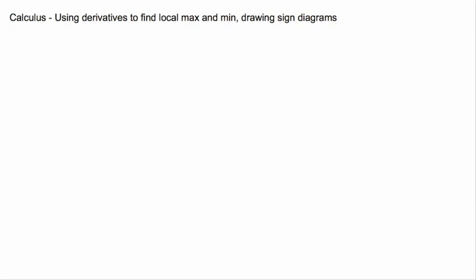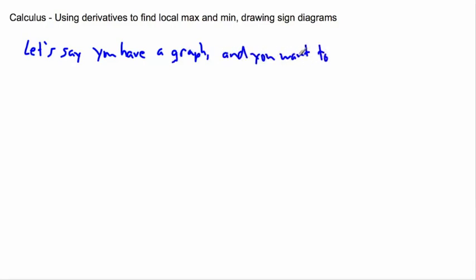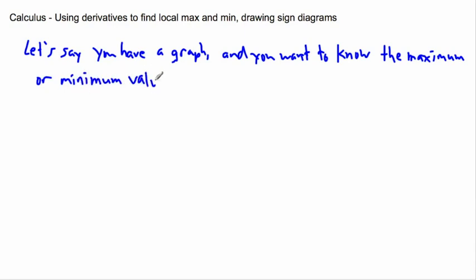So let's say you have a graph and you want to know the maximum or minimum value. How do you do it? That's sort of the question I'm asking here.